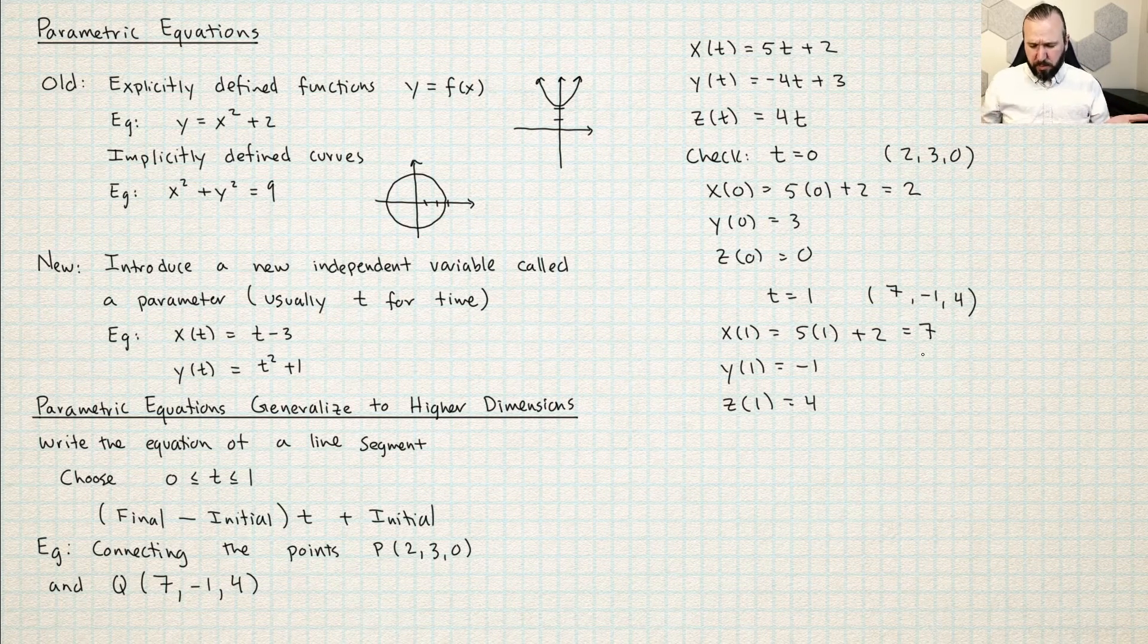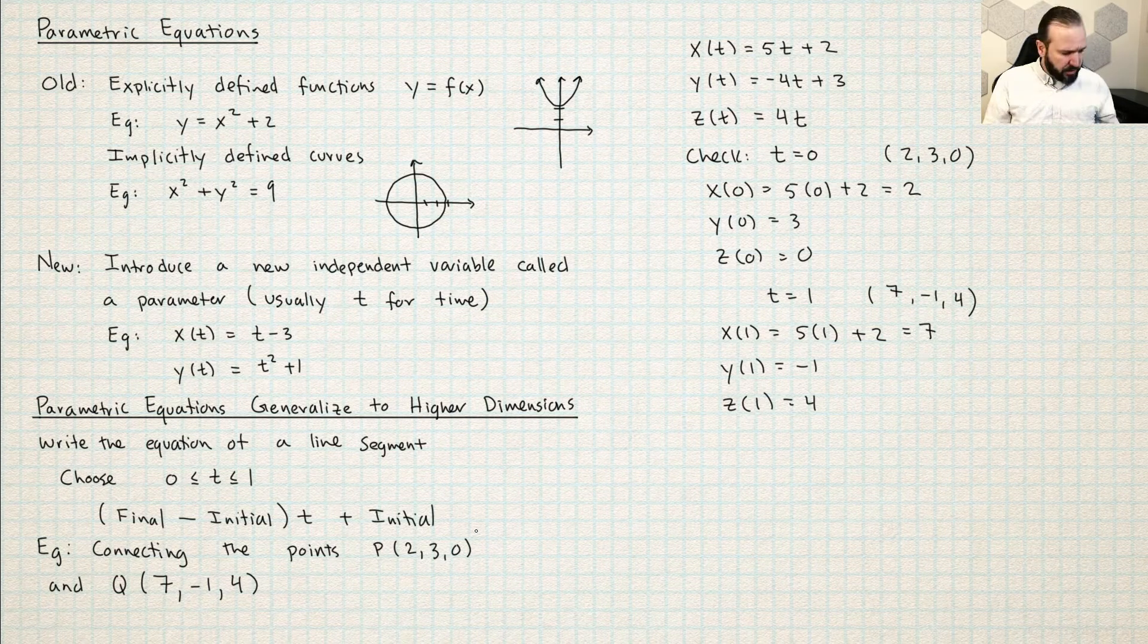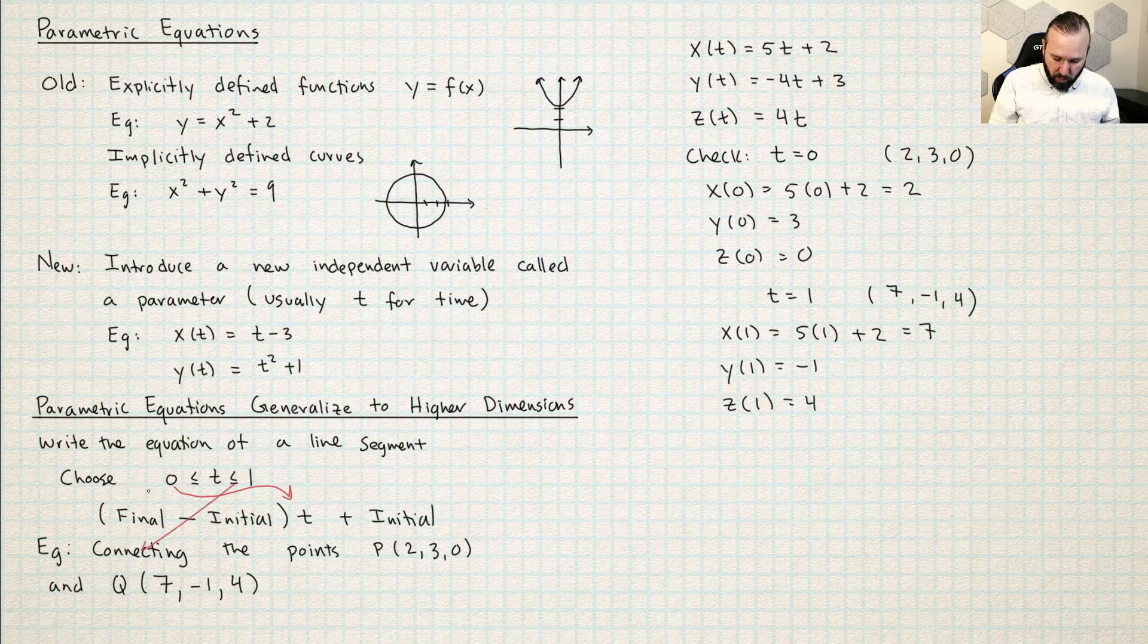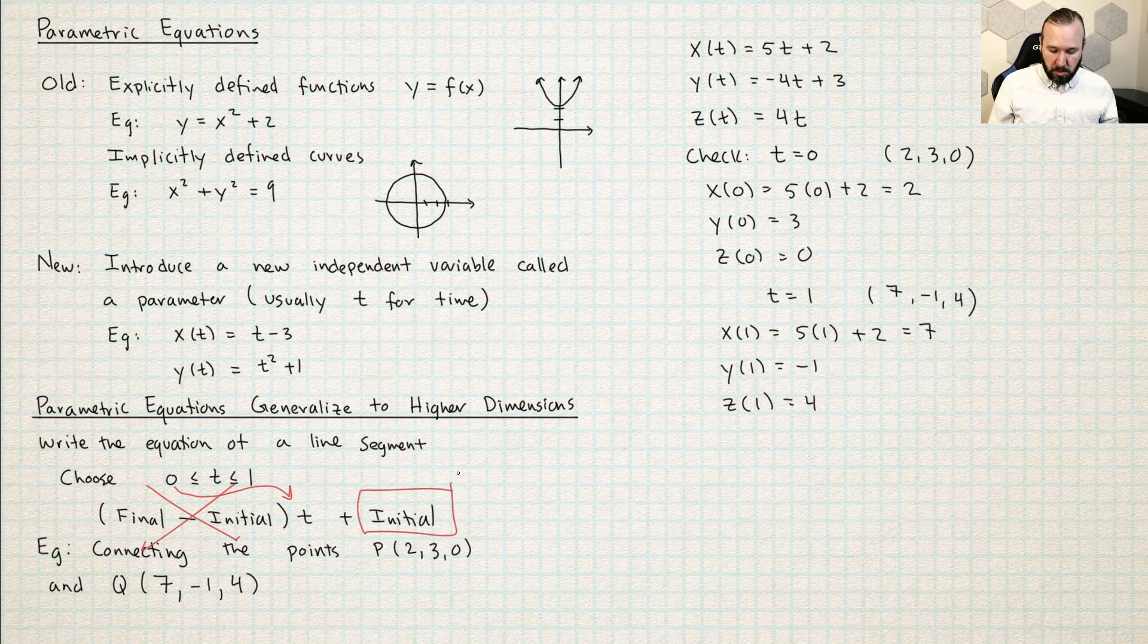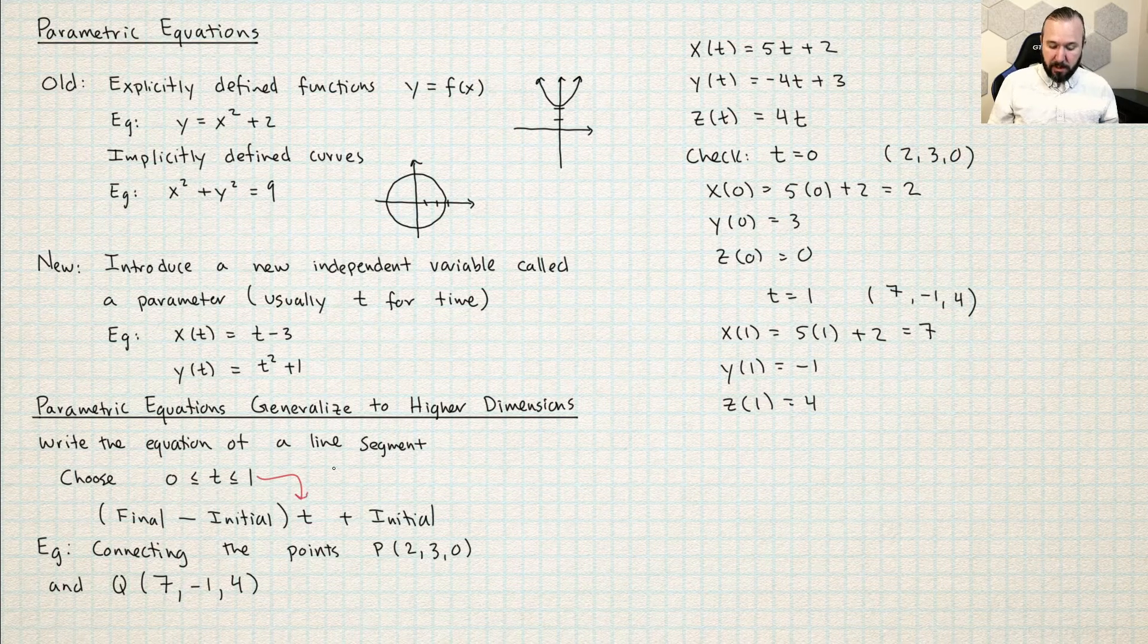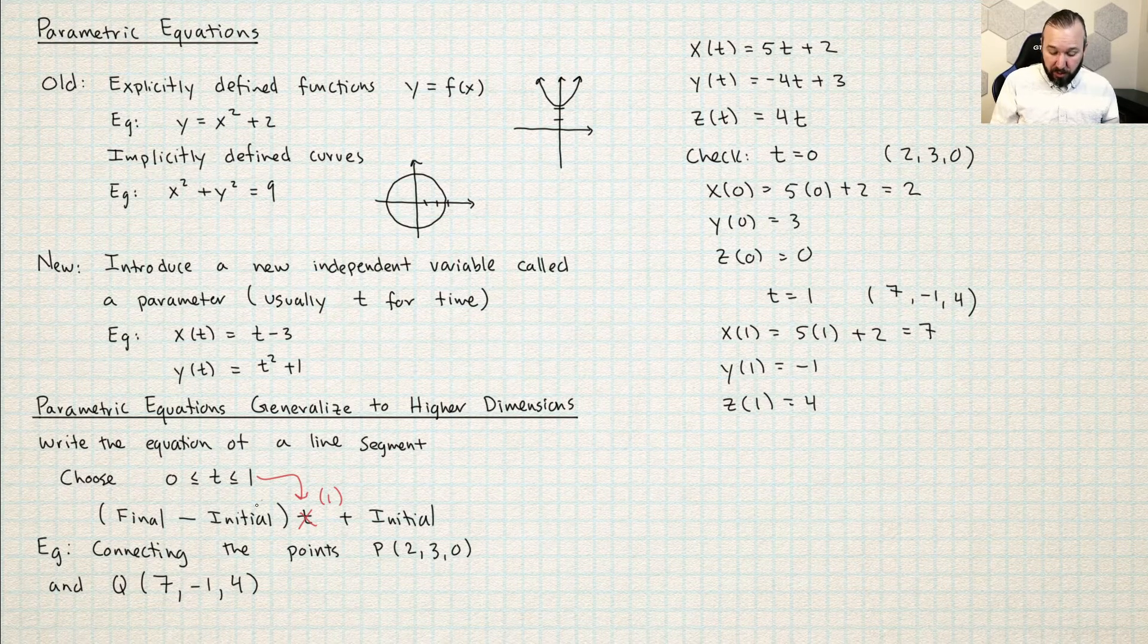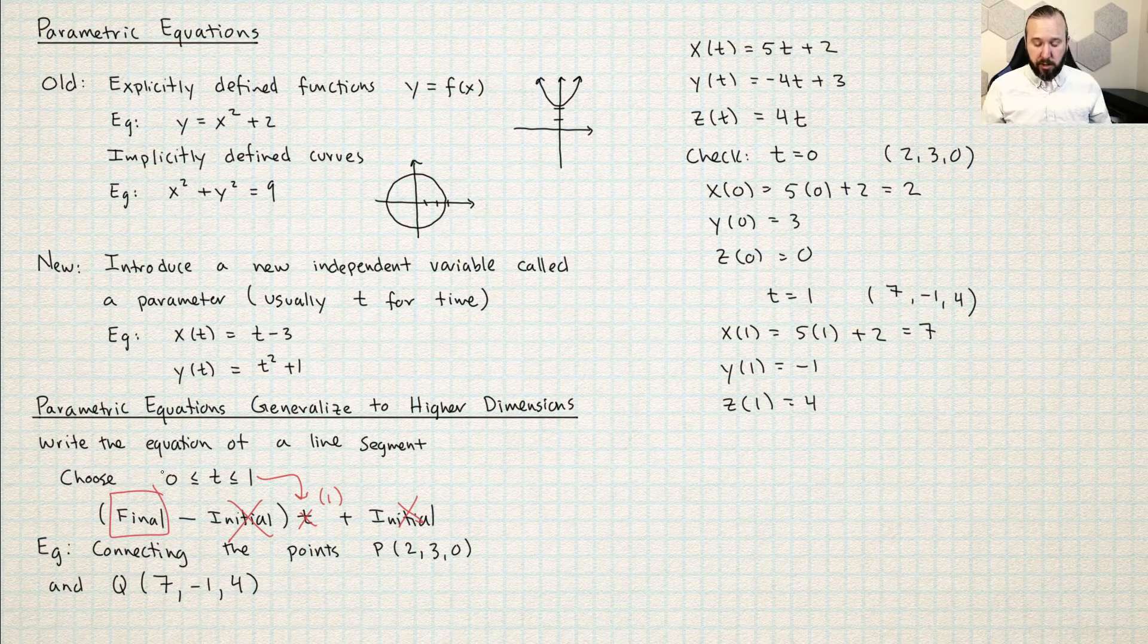So it's really transparent after you see this method in action, how it works. If I just dive into this formula right here, you can see if you plug in t equals 0, then all of that part will go away and you'll just be left with the initial. And then likewise, if I plug in t equals 1 right there for t, then this whole thing is just going to become times 1 there. So I'm just going to have final minus initial plus initial. So those two initials will cancel out and I will only have the final point left.